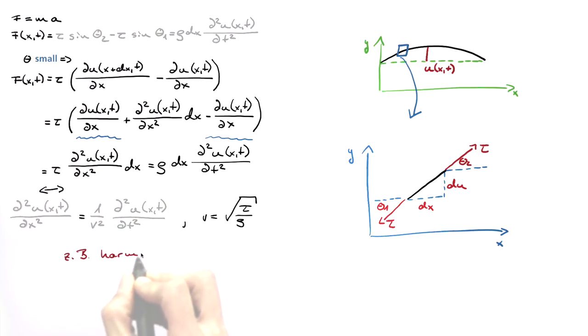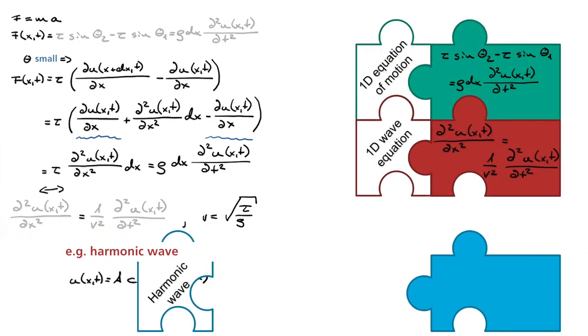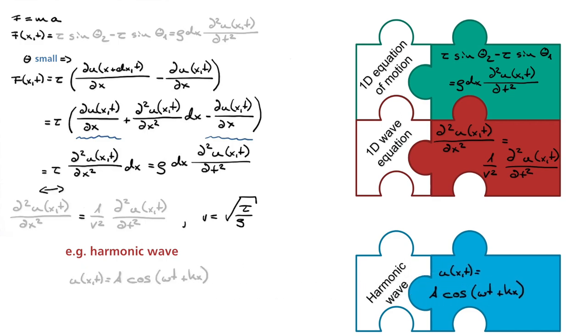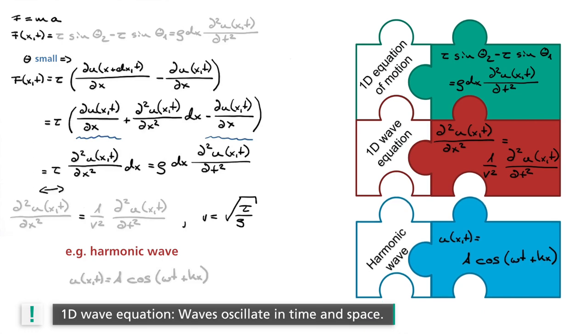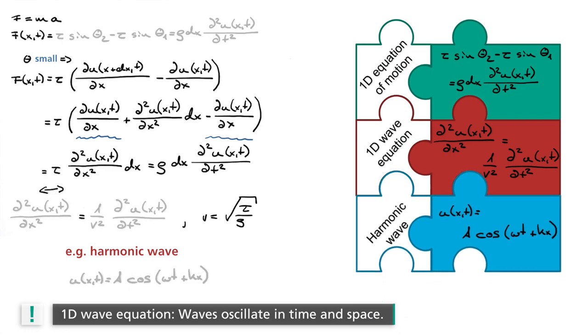One special form of this is the movement of a harmonic wave. u of x and t equals a cosine of omega t plus minus kx. Hence, both the location x as well as the time t occur in the argument of the trigonometric function. This means that the wave oscillates over time but also in space.